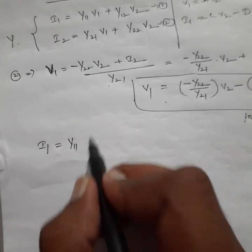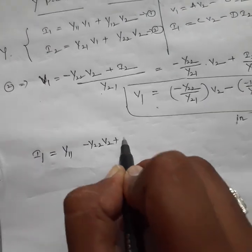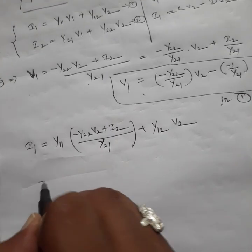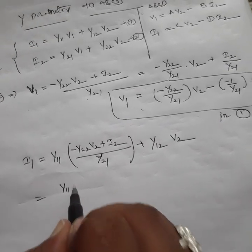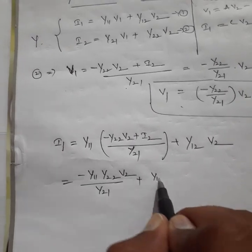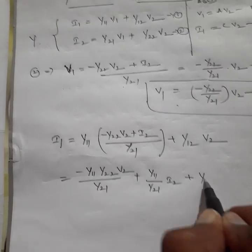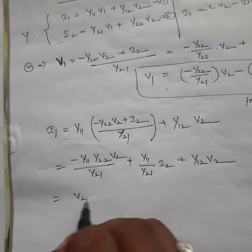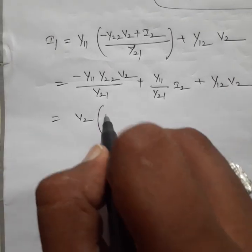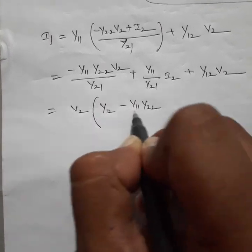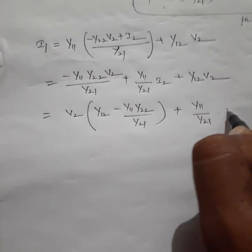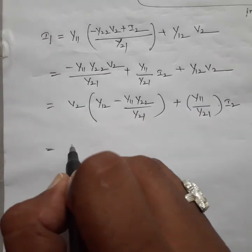Substituting v1 into equation one: i1 equals y11 times (minus y22·v2 plus i2) divided by y21, plus y12·v2. Taking v2 as common: i1 equals (y12 minus y11·y22 by y21) into v2, plus y11 by y21 into i2.